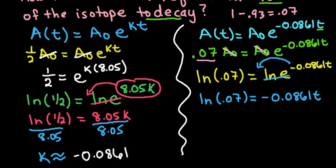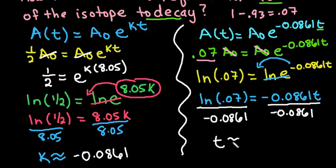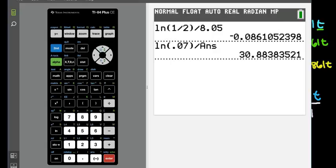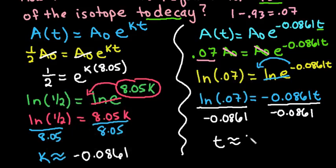Then we would divide both sides by the negative 0.0861. And again, what I'm going to do in my calculator is, instead of putting in the rounded amount, I am going to use the answer that I last used. So I'm going to type in natural log 0.07, close the parentheses, and then divide by second answer, which will give me the most exact approximation that I can get. And so we end up with 30.88 days approximately.